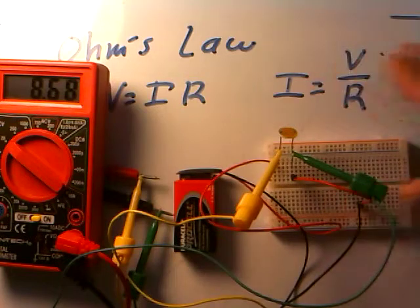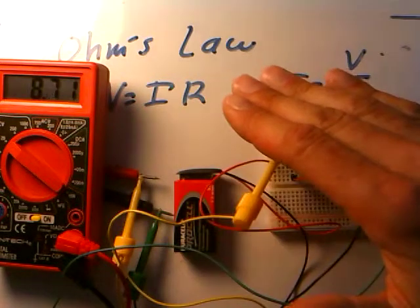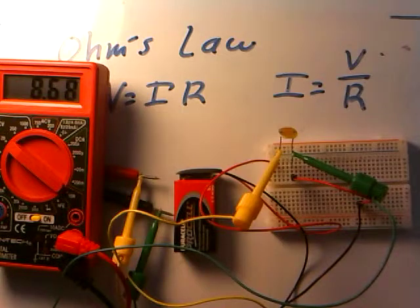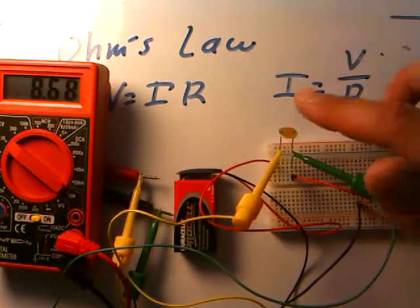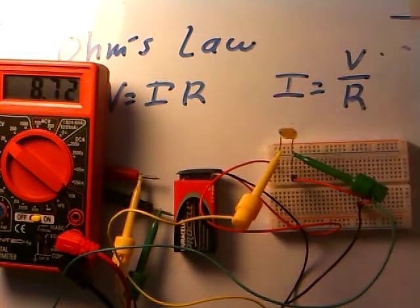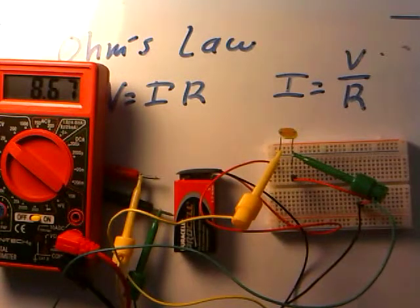We know the photoresistor's resistance varies with light intensity, so I can vary the light by moving my hand in the way. The voltage stays about the same — going from 8.6 to 8.7. Even covering it by hand gives about the same reading. So we're not seeing much voltage change across the photocell; we'll say voltage is roughly constant, but the resistance is changing.